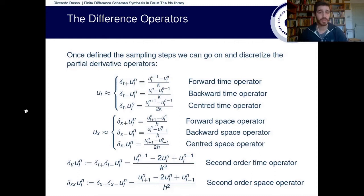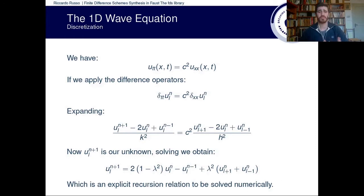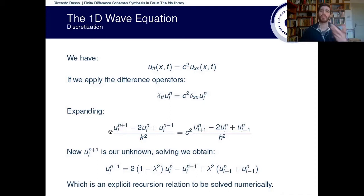We have everything we need and we can now discretize the mathematical model. We start with the continuous equation, then apply difference operators and expand them. We then need to solve for u(n+1), which is our unknown — the next step for every single data point. Solving for this gives us an explicit recursion relation that can be directly solved numerically.